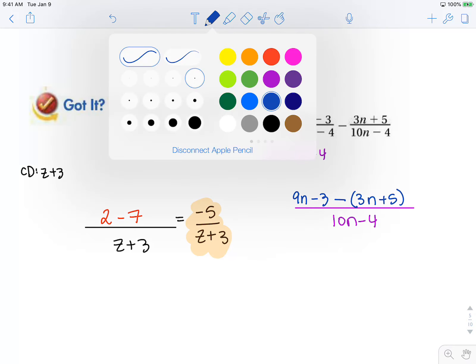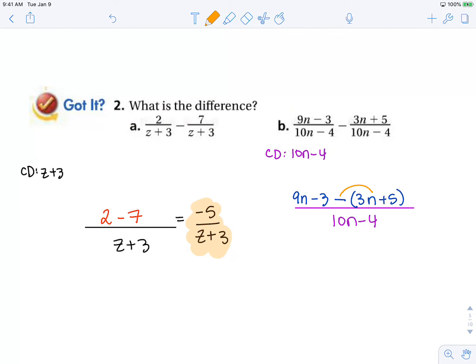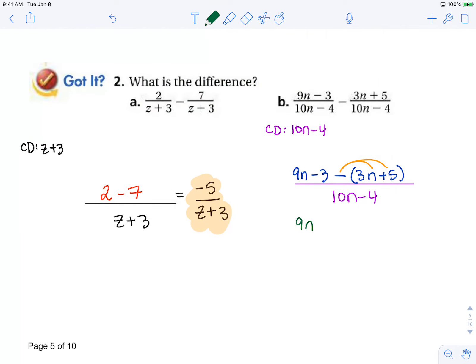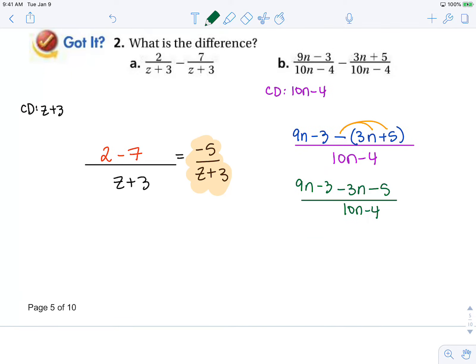So we have 9n minus 3 minus 3n minus 5, all over 10n minus 4. Combining like terms to simplify in my numerator: 6n minus 8 over 10n minus 4. And we should always simplify if we can. This has a common factor of 2.